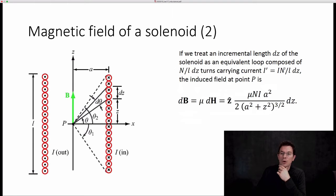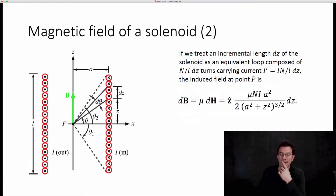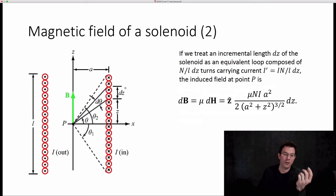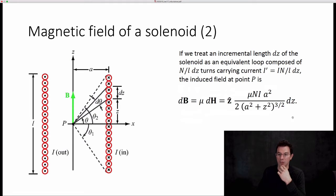This expression for the differential field comes right from the expression for the field of a single loop at a particular height Z. Similarly, this differential field is due to a filamentary loop of height dZ, and this little loop creates a differential magnetic field right here at P, given by that expression.